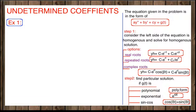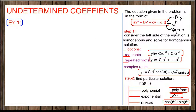In this video we are going to review the undetermined coefficients method. Whenever a second order differential equation is given in this form, we use this method. The equation is non-homogeneous — it is equal to some function g(t), where g(t) is either a polynomial, exponential, sine/cosine, or one of the combinations of these three functions.